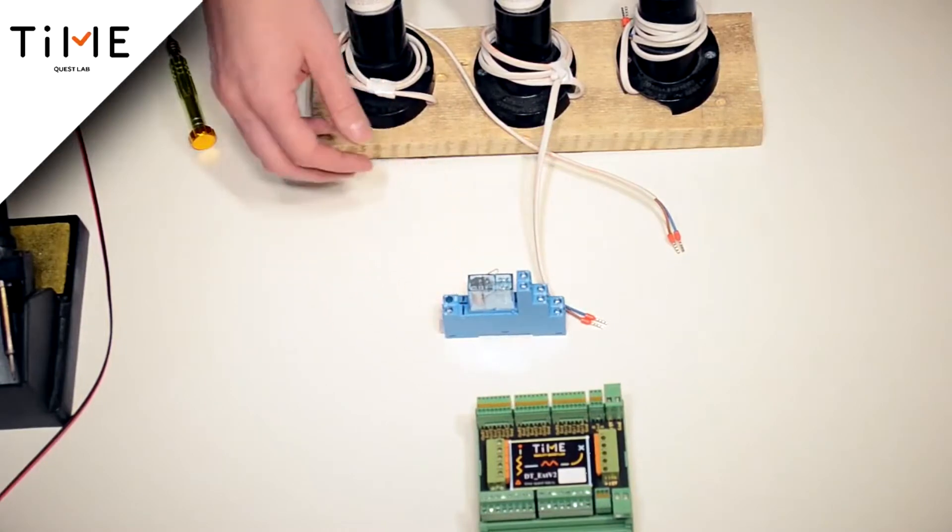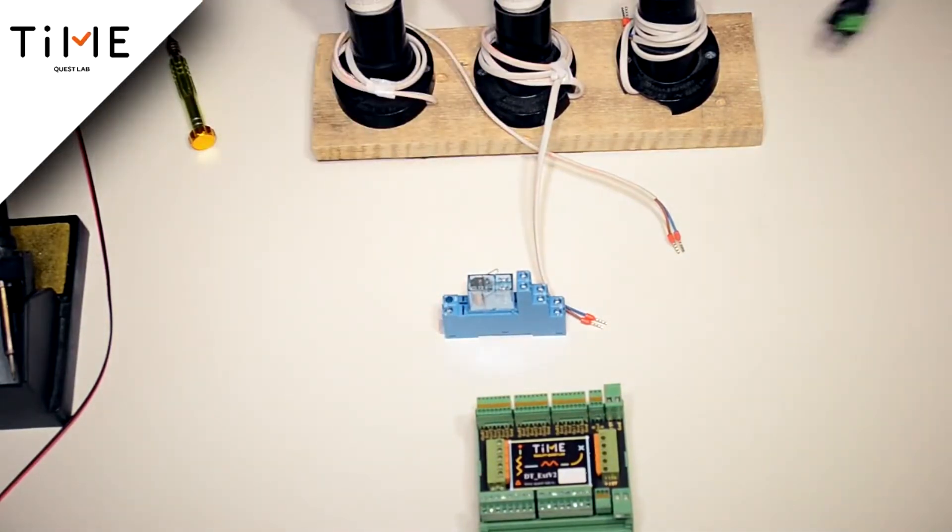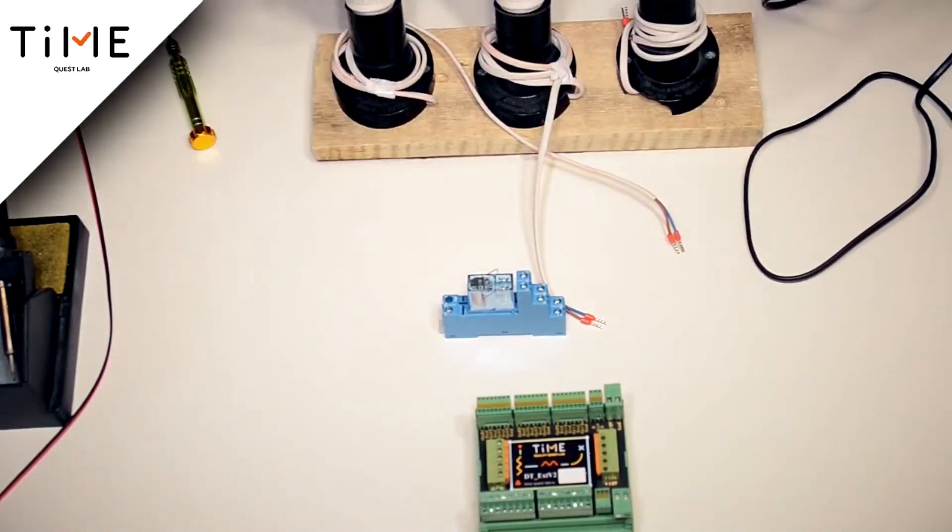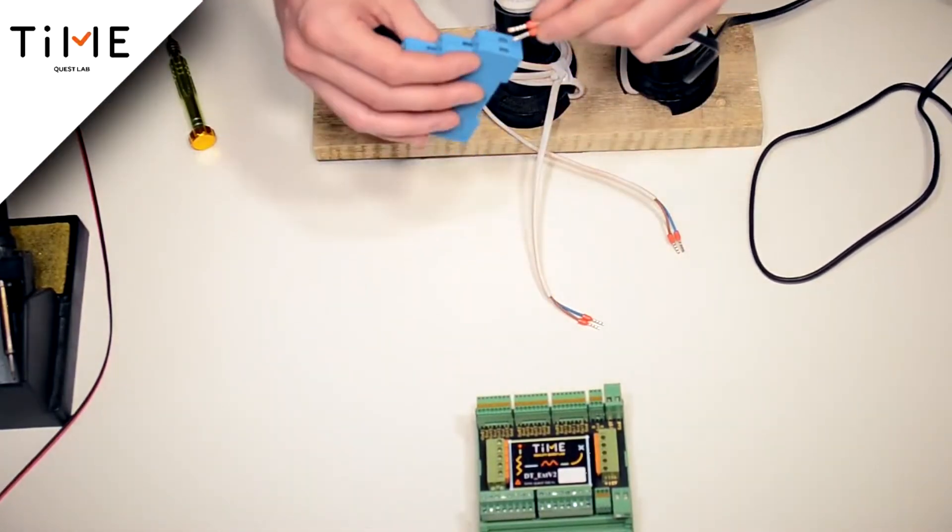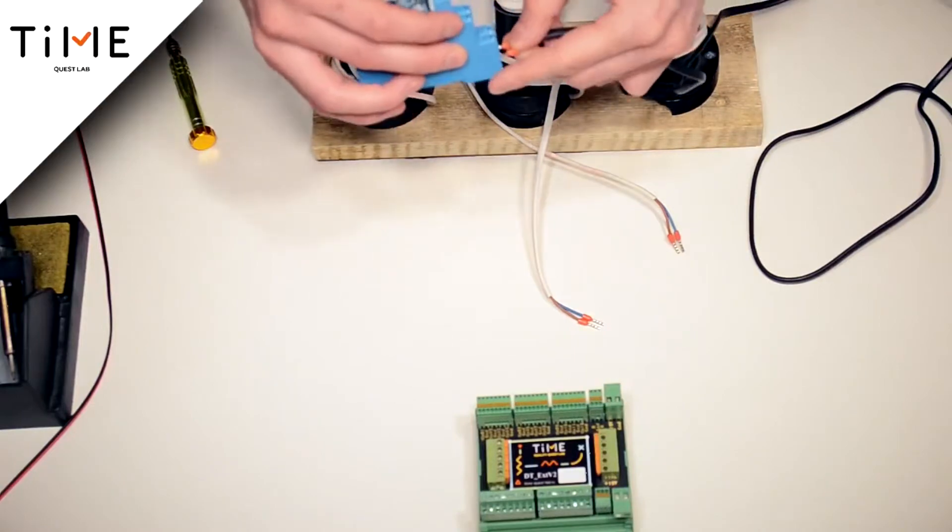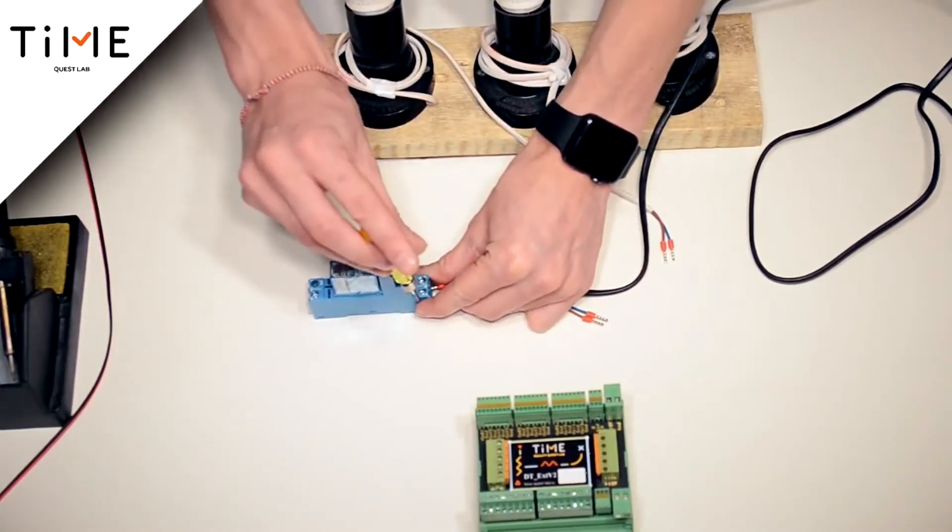Now I'm going to demonstrate this. In order for the device to turn on and turn off the light, I have to do the following. First, connect 220V power to the lower terminal of the relay.